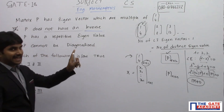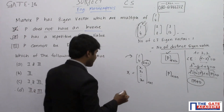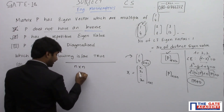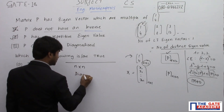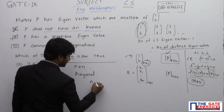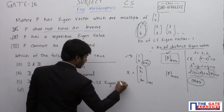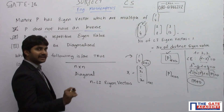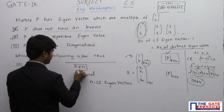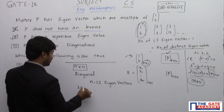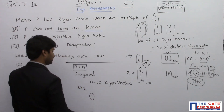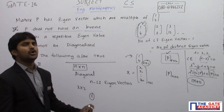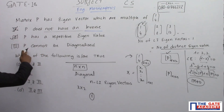The third statement says P cannot be diagonalized. The condition for an n×n matrix to be diagonalizable is that you need n linearly independent eigenvectors. Here we have a 2×2 matrix, but the number of linearly independent eigenvectors is only 1. Since we need 2 linearly independent eigenvectors and that condition is not satisfied, P cannot be diagonalized. So the third statement is correct.